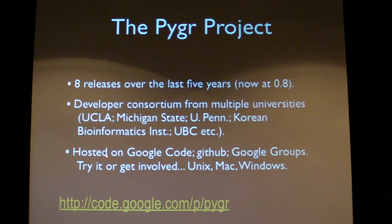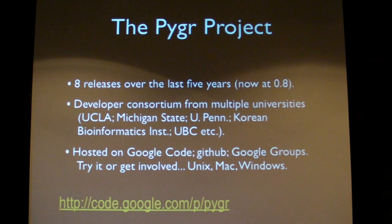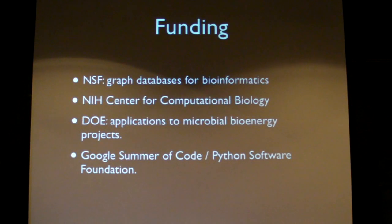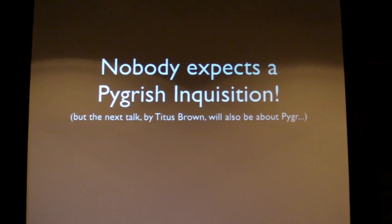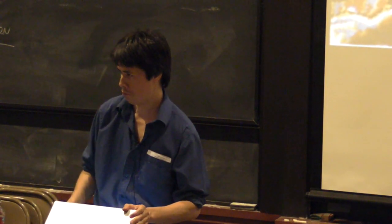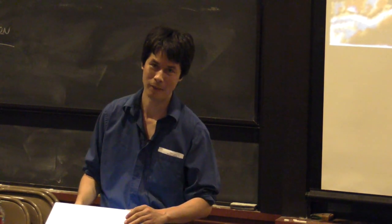Pygr is a consortium of a number of different universities. We've released about eight different versions over the last five years, hosted on Google Code and on GitHub, and funded by NSF, NIH, DOE, and also Google Summer of Code. The project is a Python graph database framework for bioinformatics.